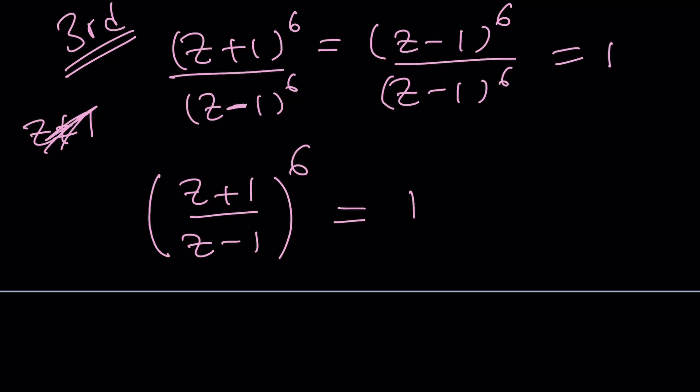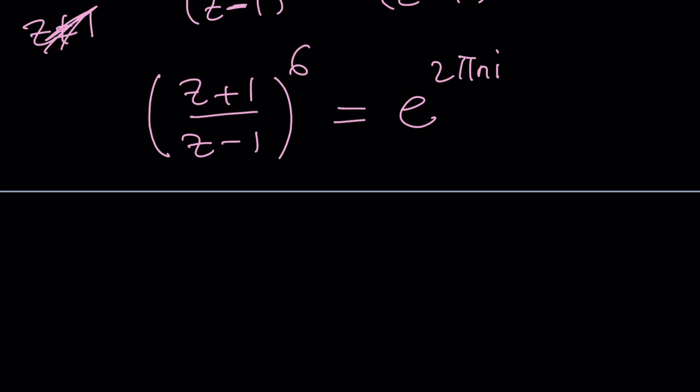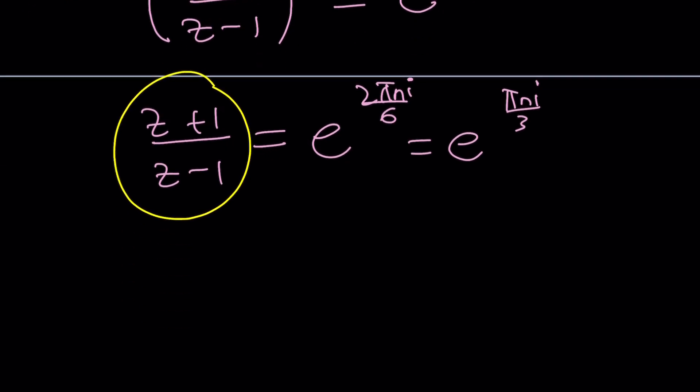So let's go ahead and write this one as e to the power 2 pi n i. And then we're going to divide both sides by six or raise both sides to the power 1 over 6. And that's going to be e to the power 2 pi n i divided by 6, which you can simplify as e to the power pi n i over 3. Here you can use n equals zero, but it's not going to give you a solution because this can't be one. Obviously, this can't be one. So n equals zero is not allowed, but you can use n equals other values. But let's go ahead and find out how we can solve for Z from here.